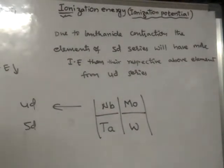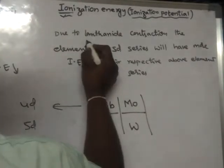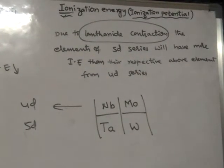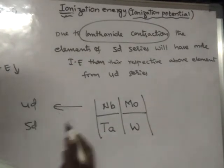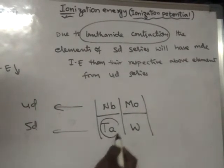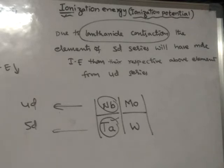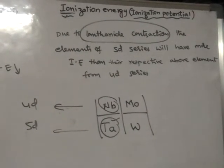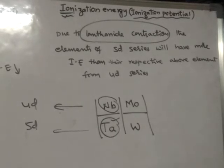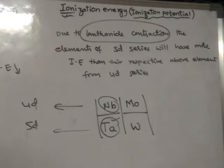Generally ionization energy should decrease in the group, but here it is an exception. Due to lanthanide contraction, elements of the 5d series will have more ionization energy than their respective above elements from the 4d series. For example, tantalum should possess less ionization energy than niobium, but due to lanthanide contraction, tantalum has more ionization energy. Normally ionization energy decreases down the group, but when lanthanide contraction is met, it increases. Actinide contraction also increases ionization energy down the group.